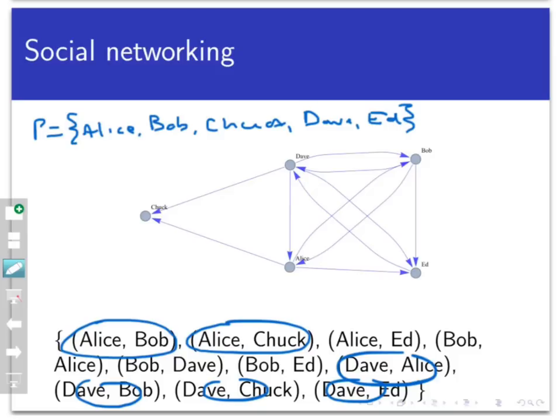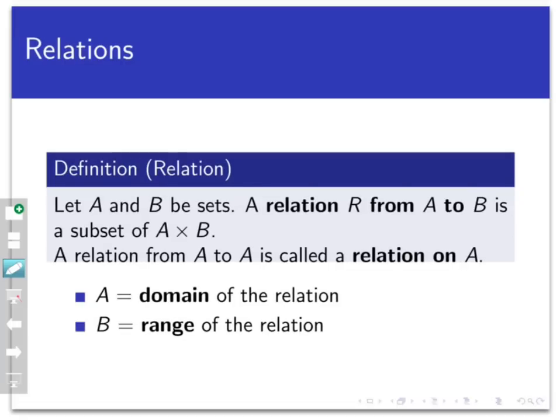So since this is a handy way of keeping track of relationships, it's no surprise that what we've described here is called a relation. Here's the formal definition, although there's really not much to it. Let A and B be sets. Then we're going to define a relation from A to B to be just a subset of A × B.